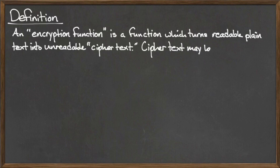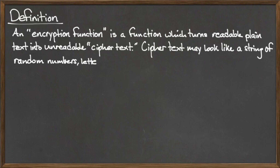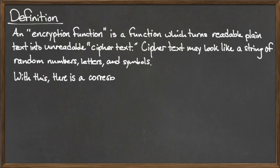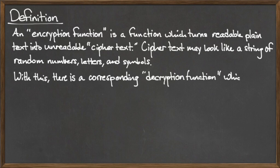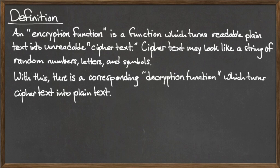The first term is an encryption function. An encryption function is a function which turns readable plain text into unreadable ciphertext. The ciphertext may take many forms, usually a string of random numbers, letters, or symbols.